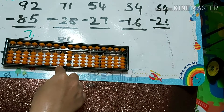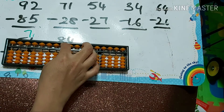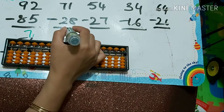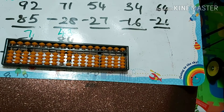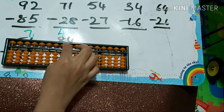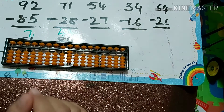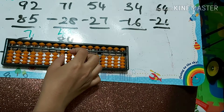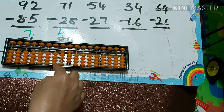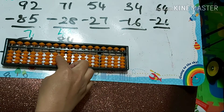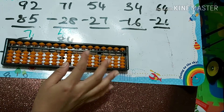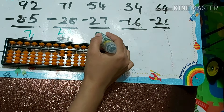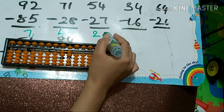Then we go for the combination: plus 2, then minus 10. Answer is 43. Next one: 54 minus 27. How to do minus 2: minus 5 plus 3. Next you must do minus 7 — papa down, mama down, babies down — so minus 10 plus 5, and how many babies for 7: 2, so minus 2. Answer is 27.